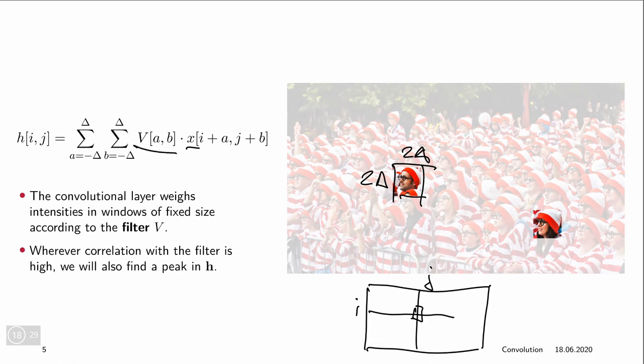Then we would expect to receive a large value in our hidden layer whenever the correlation between this matrix V, which we call a convolutional filter, and the input is high. Then we will get a peak in h. And if we apply this to a different region where there's no person.